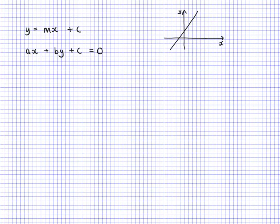If it was a negative gradient it would go this way. And if it had a negative y-intercept it would go through somewhere here maybe. So positive gradient and negative y-intercept would be like that. Now negative gradient and negative y-intercept would go somewhere here.